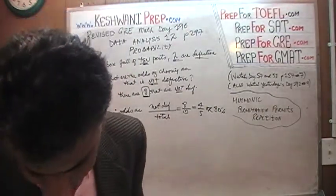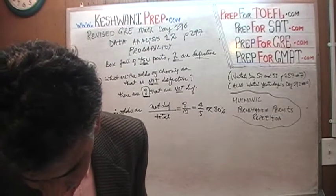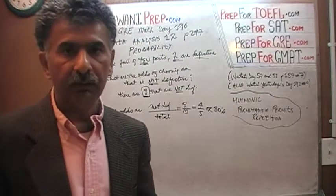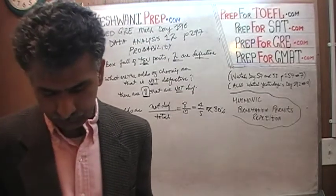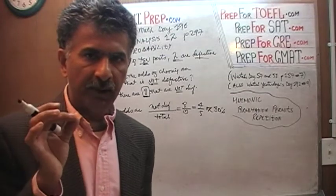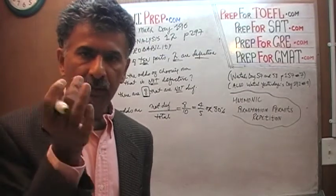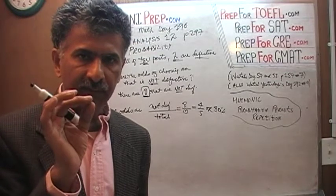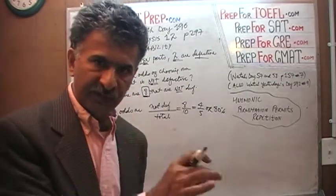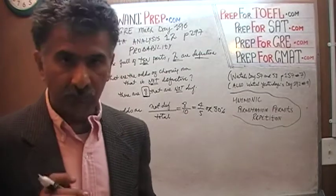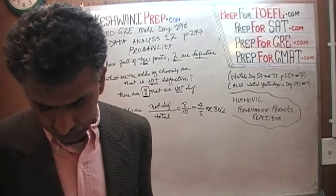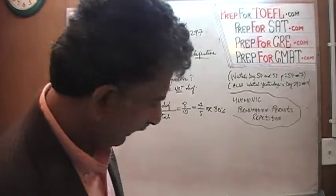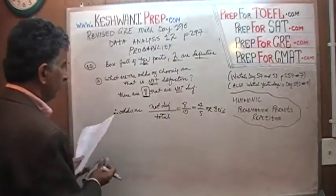Let's look at Part B. If you choose 2 parts at random from the box without replacement — so we pick one part, find out whether or not it is defective, and once we ascertain that, we do not put it back in the box. It just stays outside the box, which is what it means by without replacement. What are the odds that the 2 parts we pick are both defective?